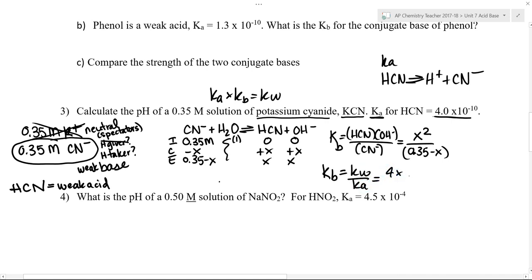So Kw is 1 times 10 to negative 14. Ka is 4 times 10 to negative 10th. So if I plug that in and solve, I'm going to get 2.5 times 10 to the negative fifth as my Kb value.